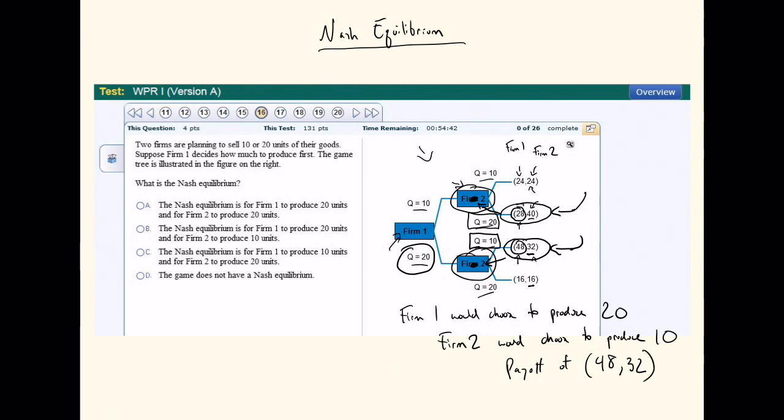This is a Nash equilibrium because no player has anything to gain from changing his or her strategy in this case. So if either firm decided to change its strategy away from where we arrived with our Nash equilibrium and the way that we solved this game, they would be worse off. So it just wouldn't make rational sense.